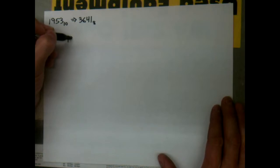Alright, we're going to convert a base 10 number to a base 8 number, decimal to octal. We're going to do 1953 base 10 converted to 3641 octal. We start with 1953 and we divide it by 8.